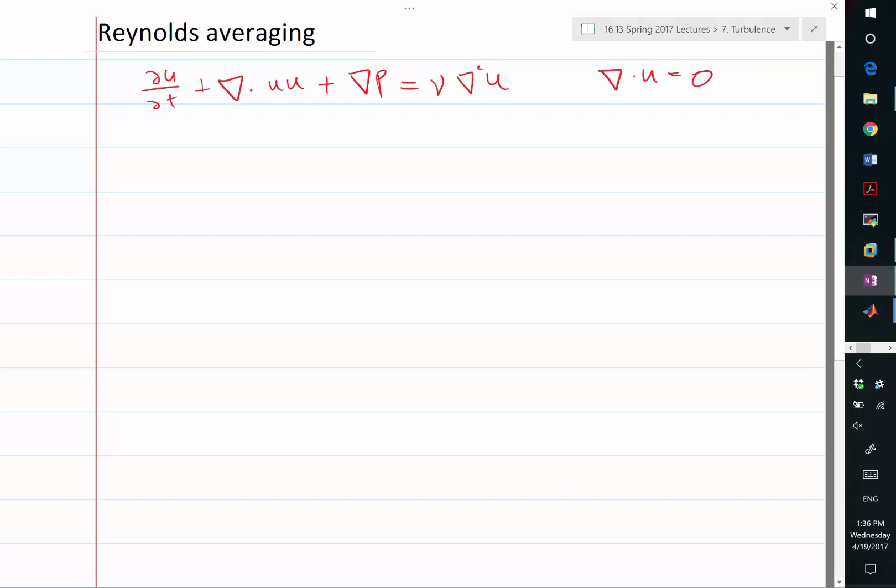So Reynolds averaging means that if you take a time average over both sides of the equation, they are still equal. We take the time average of left-hand side minus right-hand side, you are just time averaging zeros, you still get zero. So after time averaging, these two sides have to be equal. So I'm just going to use over bar to denote time averaging.